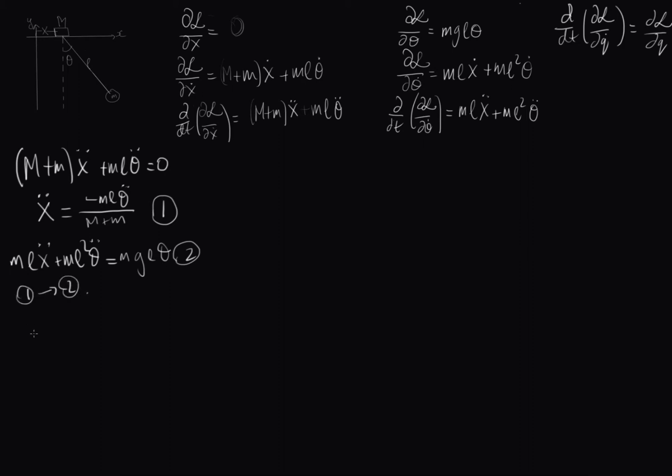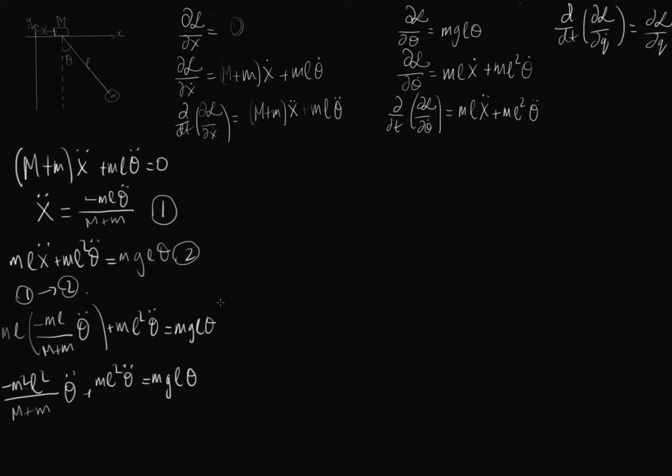So I'll put 1 into 2. So we get M L times by negative M L over big M plus little m theta double dot plus M L squared theta double dot equals M G L theta. So now let's expand out this, and we get negative M squared L squared over big M plus little m theta double dot plus M L squared theta double dot equals M G L theta.